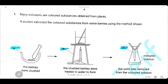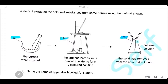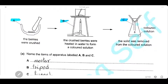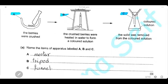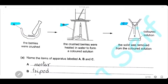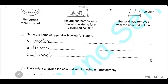Question 1. Many indicators are colored substances obtained from plants. A student extracted the colored substance of some berries using the method shown. Name the apparatus labeled A, B, and C. A is a mortar, B is a tripod stand, and C is a filter funnel.